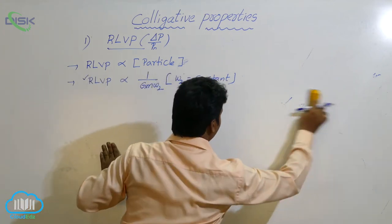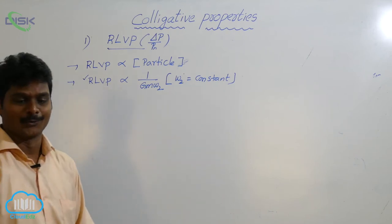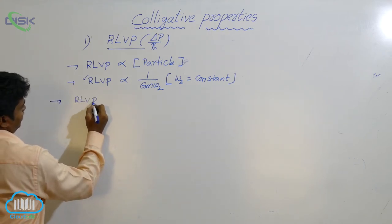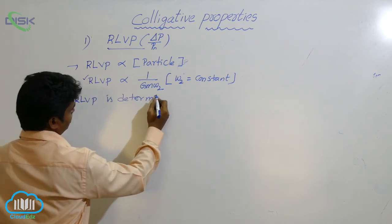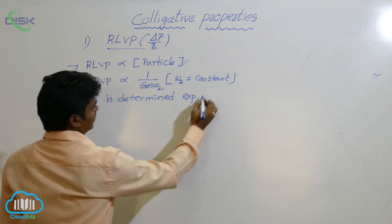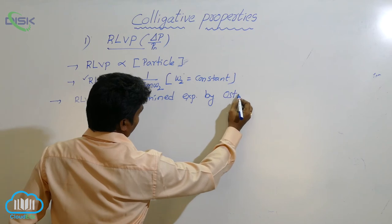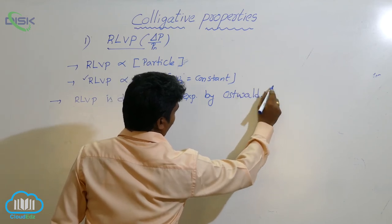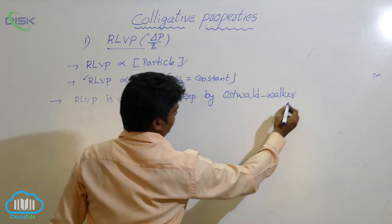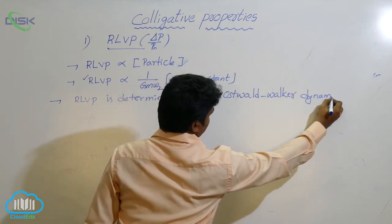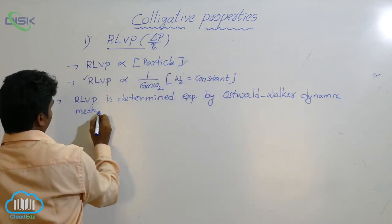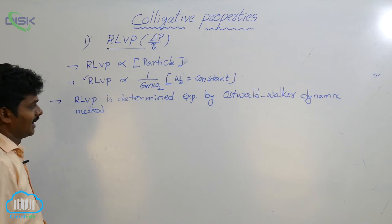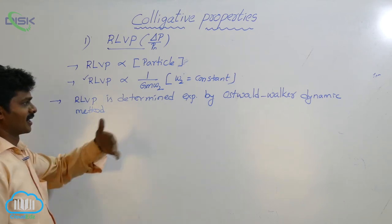RLVP is determined experimentally using the Ostwald-Walker dynamic method. Using this method, RLVP of a solution containing a non-volatile solute is determined.